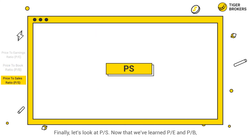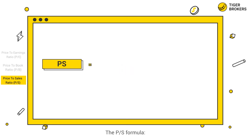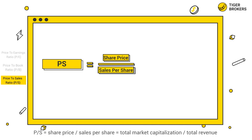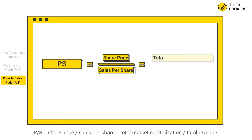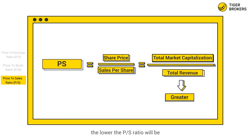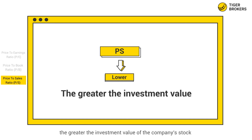Finally, let's look at PS. Now that we've learned PE and PB, the price-to-sales ratio will be easy to understand. The PS formula: PS equals share price divided by sales per share, which equals total market capitalization divided by total revenue. The greater the total revenue, the lower the PS ratio will be. Generally speaking, the lower the PS ratio, the greater the investment value of the company's stock.